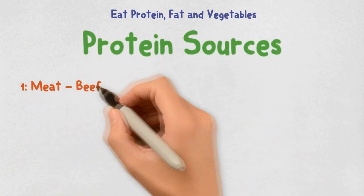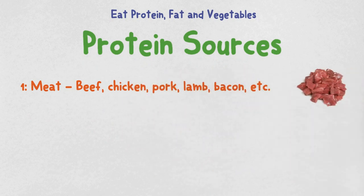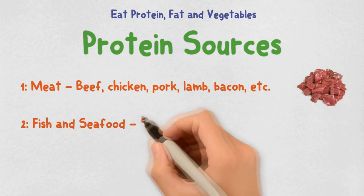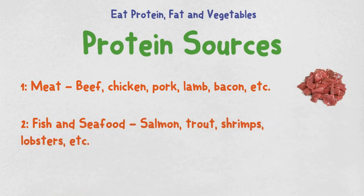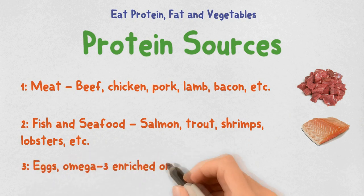The protein sources are: meat—beef, chicken, pork, lamb, bacon, etc.; fish and seafood—salmon, trout, shrimp, lobsters, etc.; and eggs—omega-3 enriched or pastured eggs.